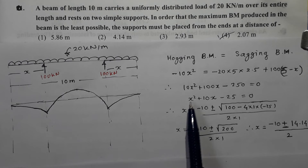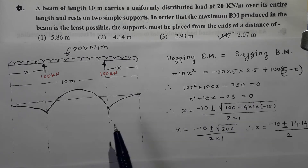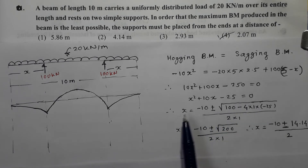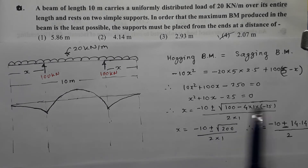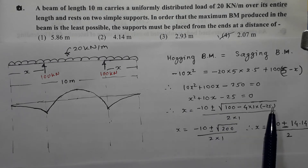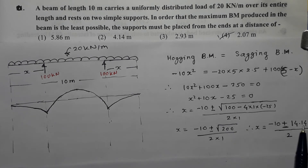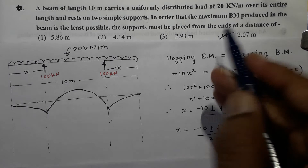If I simplify it further, the equation reduces to x² + 10x − 25 = 0. Using the quadratic formula: x = (−b ± √(b² − 4ac)) / 2a, substituting values gives (−10 ± √(100 + 100)) / 2, which is (−10 ± √200) / 2. Root of 200 is 14.14. Rejecting the negative value, the positive value of x is 4.14 / 2 = 2.07 m. The correct option is option number 4.